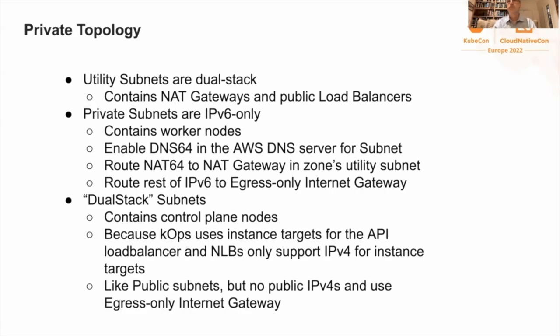After AWS released support for IPv6-only subnets, we implemented private topology. In private topology, we have three types of subnets. First, at the edge, we have dual stack utility subnets — this is where KOPS puts NAT gateways and public load balancers, and it does not put any nodes in these subnets. Worker nodes are placed in IPv6-only private subnets. In order for nodes to connect to IPv4 services, KOPS enables DNS64 in the subnet's AWS DNS servers. It routes the NAT64 range to the NAT gateway in the zone's utility subnet, and the rest of IPv6 to an egress-only internet gateway.